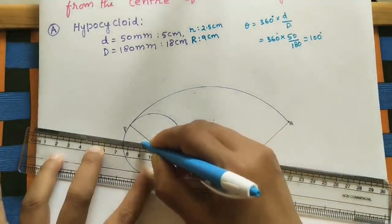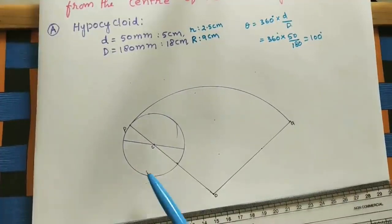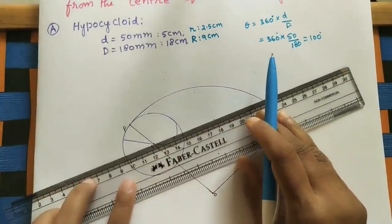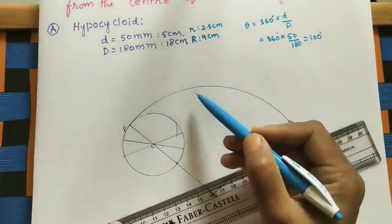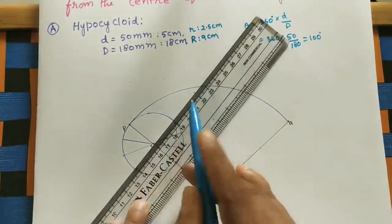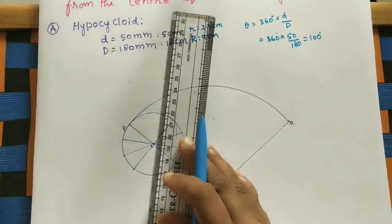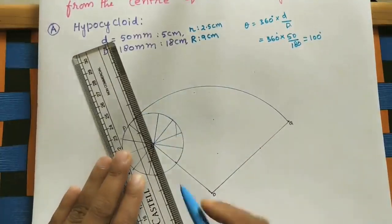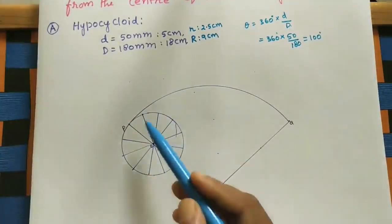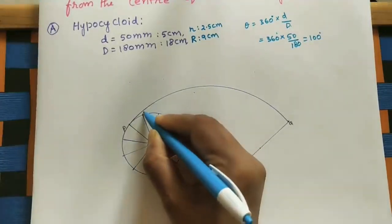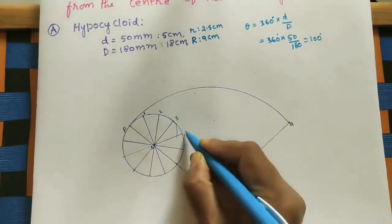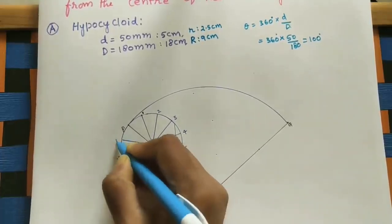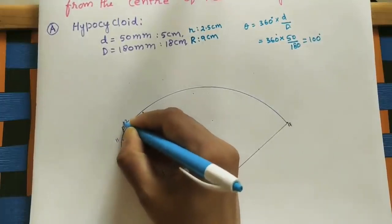Extend each line through the circle. Since the circle is symmetrical about any diameter, the opposite points are obtained automatically. After dividing into 12 equal parts, label the points on the circumference: 1, 2, 3, 4, 5, 6, 7, 8, 9, 10, 11, and P as the starting point.